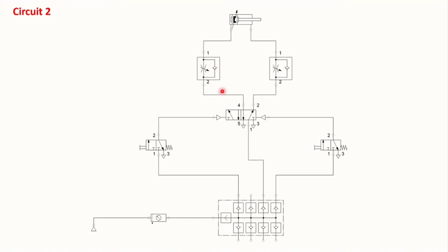Based on the symbol we can understand how this component works. When air enters and this valve is actuated, the air reaches a point with two branches. It first finds the free path, passes through that way, and gets to the cylinder port. The air then passes inside the cylinder and the piston moves towards the fully advanced position.